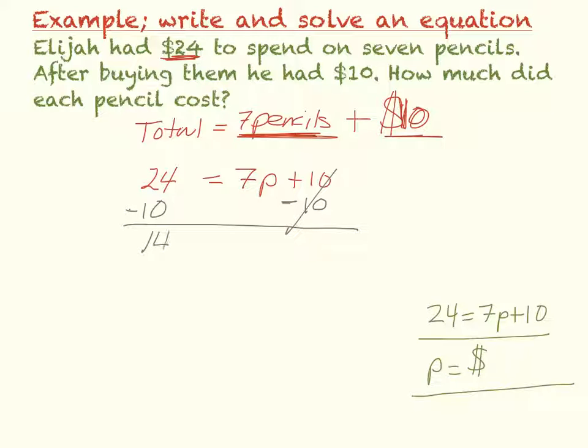Twenty-four minus ten is fourteen, equals seven times P. Seven times P, the opposite of times, is divide. So we divide by seven. Divide by seven. So fourteen divided by seven is two. So that is P. So P equals two dollars.